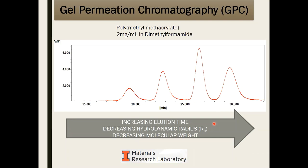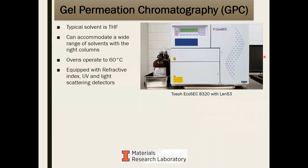The instrument we have at MRL is a Tosoh Ecosec 8320. The typical solvent for GPC is THF (tetrahydrofuran) — it's very common, dissolves many polymers, and is why it's generally used. However, you can run other solvents as long as you have the correct columns. Since columns are generally made of cross-linked polymers, if the solvent severely affects that polymer, you won't get efficient separation and could potentially destroy the column. Always pair the solvent with the right column.